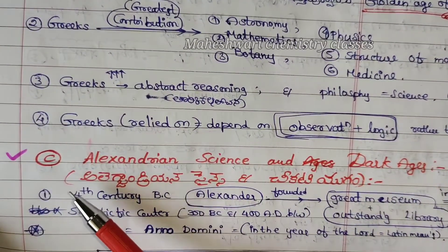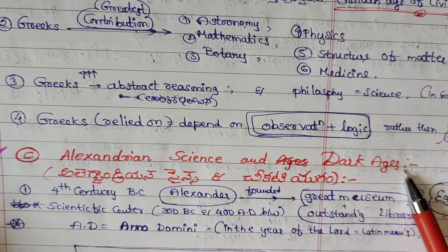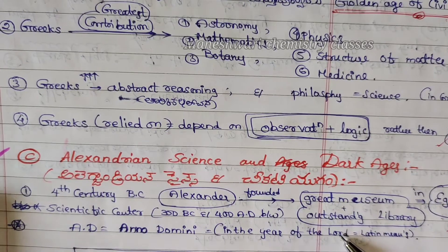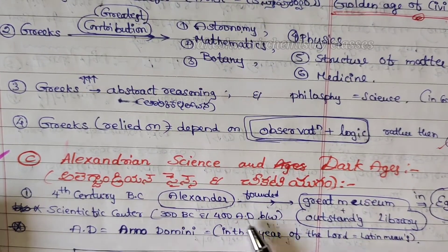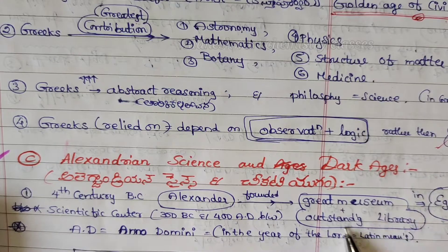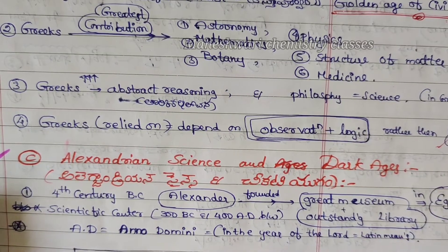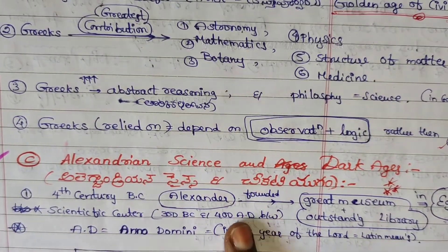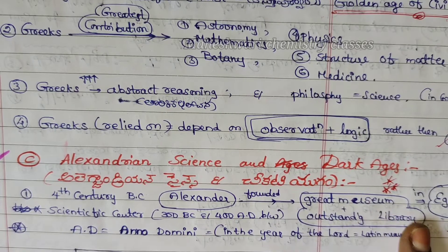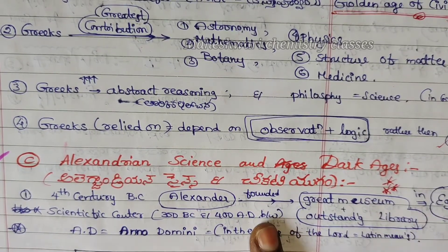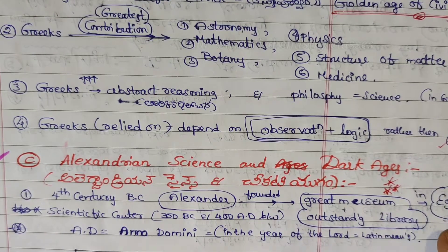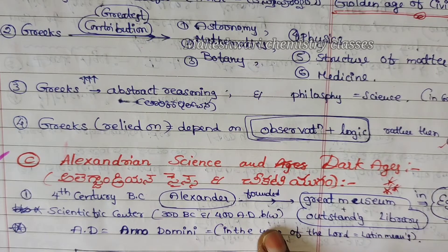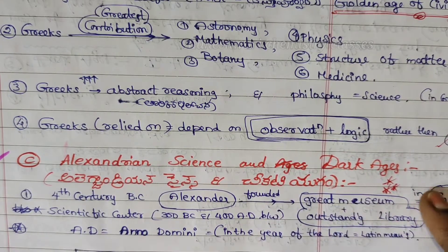Third point: Alexandrian Science and Dark Ages Period. In the 4th century BC, Alexander founded the greatest museum and outstanding library in Egypt. This museum and library operated from 300 BC to 400 AD and served as a major scientific center. BC means Before Christ and AD means After Christ.